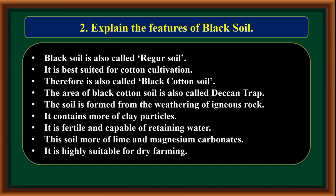Explain the features of black soil. Black soil is also called regur soil. It is best suited for cotton cultivation, therefore it is also called black cotton soil. The area of black cotton soil is also called Deccan trap. This soil is formed from the weathering of igneous rock. It contains more clay particles and is fertile.